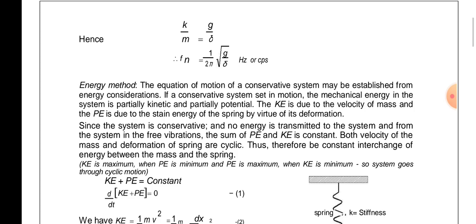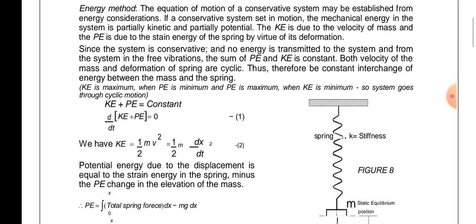Now, the energy method states that the total energy is constant throughout — this is based on the law of conservation of energy. Total energy at any instant is constant whether it converts from one form to another. Kinetic energy is maximum when potential energy is minimum, and vice versa, because total energy is constant. Therefore: KE + PE = constant, and taking its derivative gives zero.